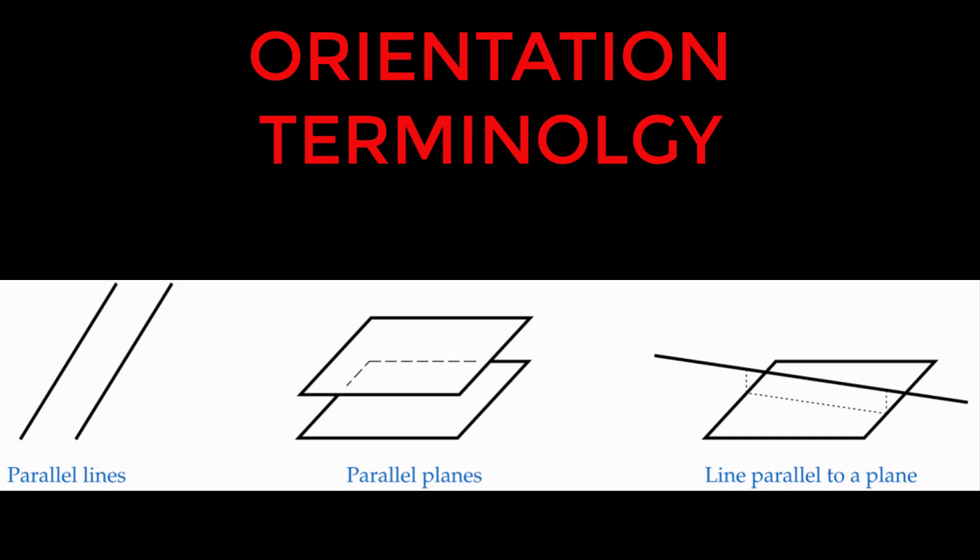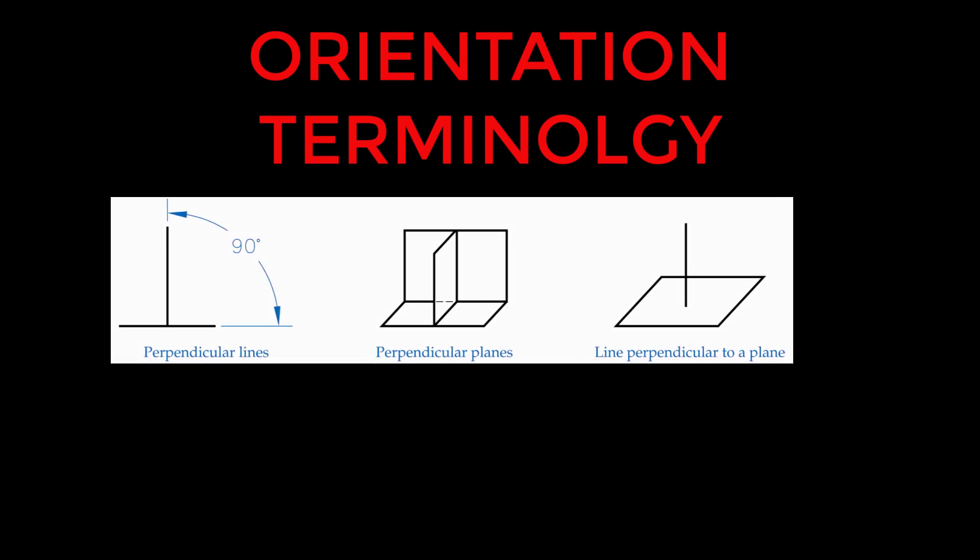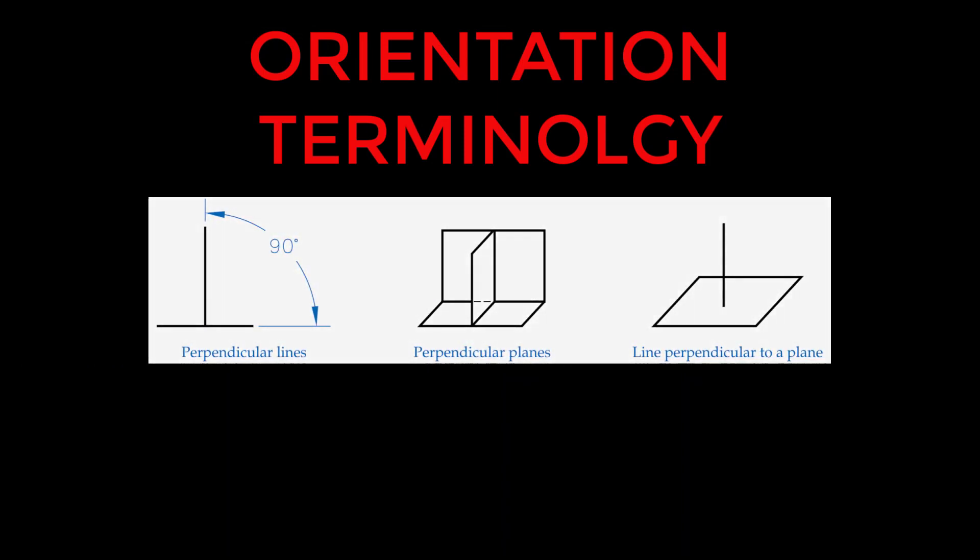Parallel means the elements never intersect even if extended infinitely. Perpendicular means two elements form a right 90 degree angle with each other. So this can be perpendicular lines, a plane can be perpendicular to another plane, or to a line.